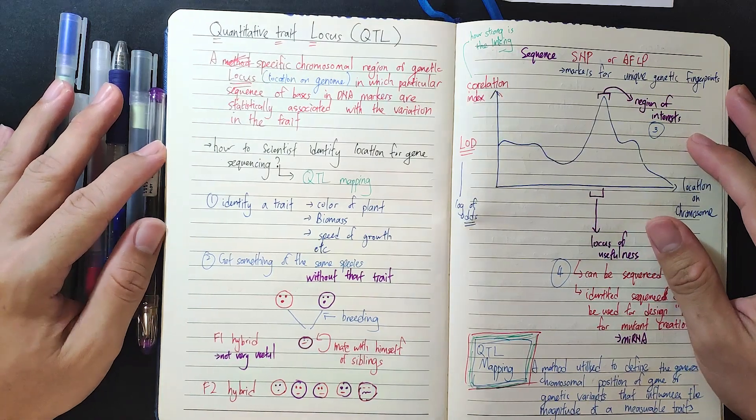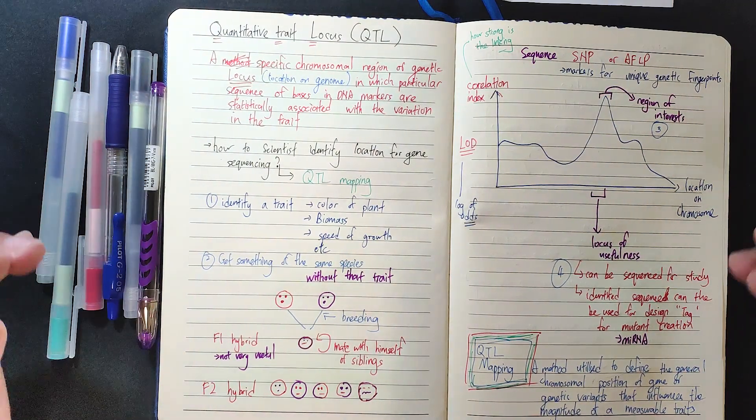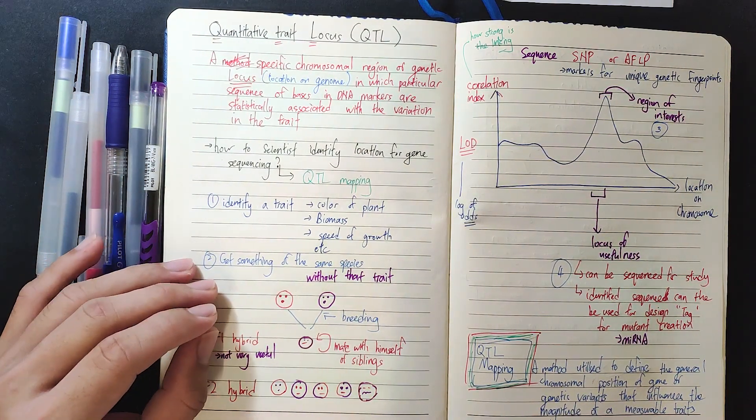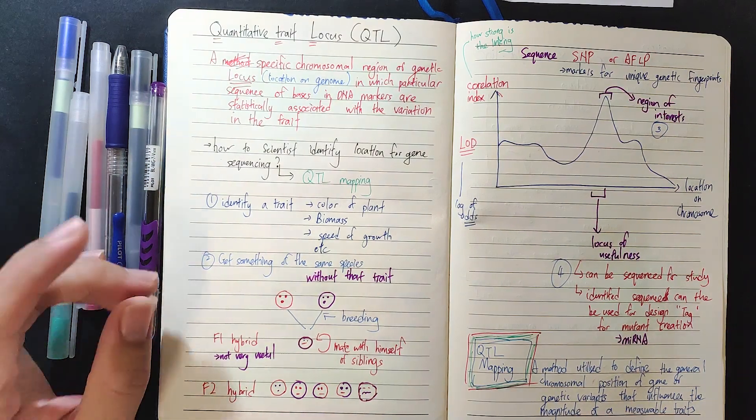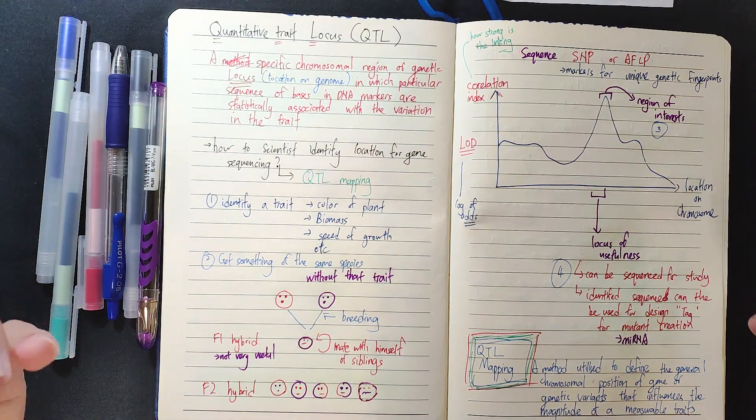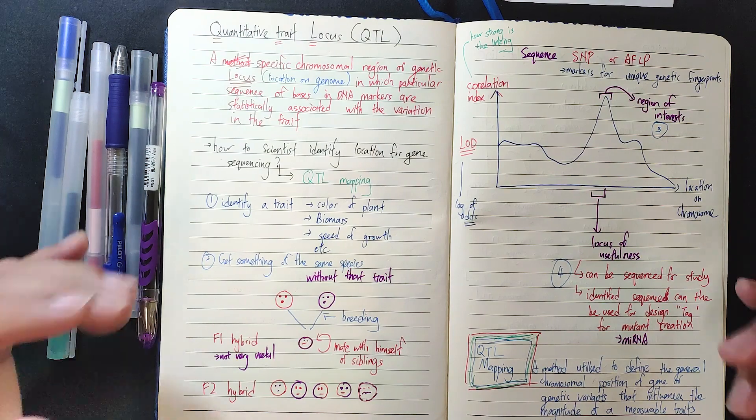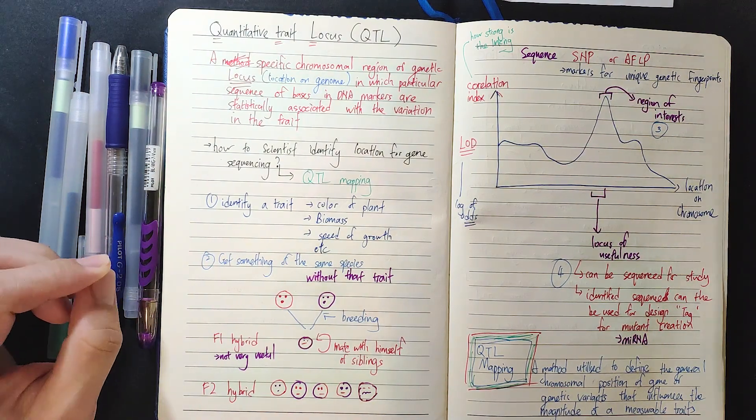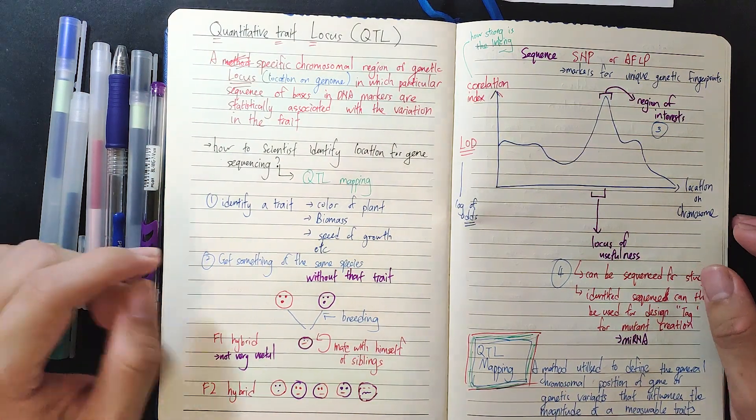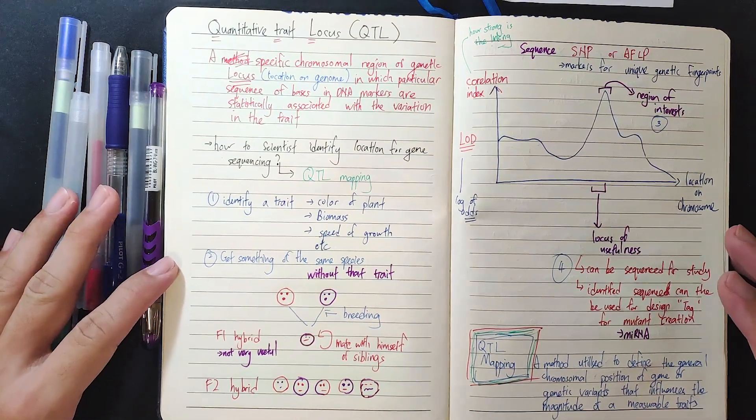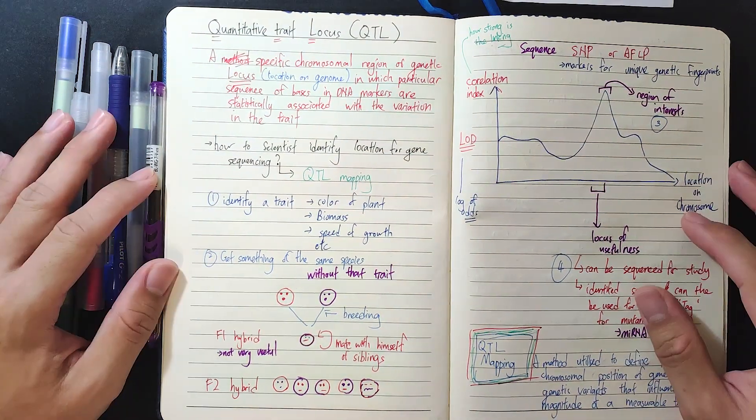Okay, so just go for the very general definition first. QTL is a specific chromosomal region of genetic locus in which particular sequences of bases in DNA markers are statistically associated with the variation in trait. So I'm not going to explain this, it's too complicated for anyone to actually understand.